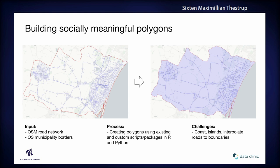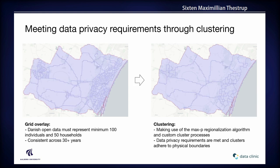Next we need to map those polygons into the grid cells, because that's where the data lives. Our next step is to make an overlay — here we have the grid overlay. The problem is that Denmark's privacy constraints require a minimum of 50 households and 100 people per unit. So we go through an additional clustering step, shown on the right, using the max-p regionalization algorithm and custom clustering scripts developed in R, which ensures the result adheres to the privacy constraints.